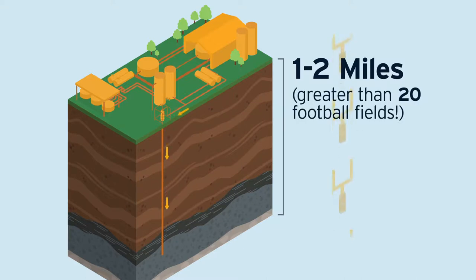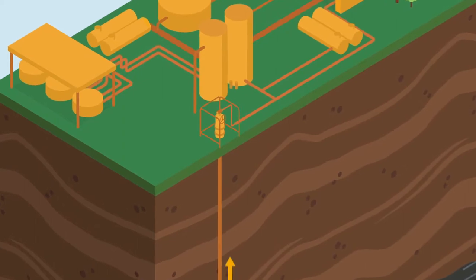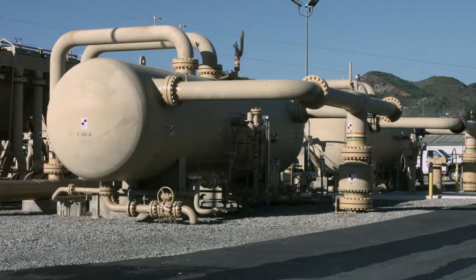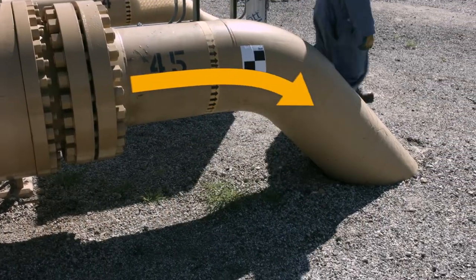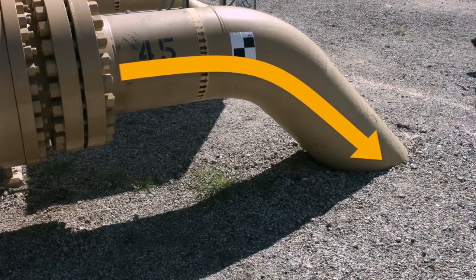When more natural gas is needed to meet customer demand, a reverse process begins and natural gas is withdrawn from the storage reservoir, decompressed, cleaned, and odorized to give it that distinctive smell before being returned back into the transmission pipeline for delivery to our customers.